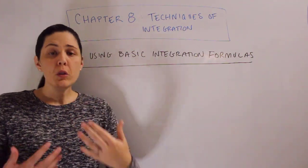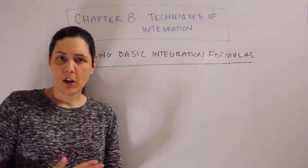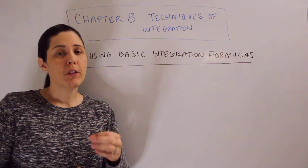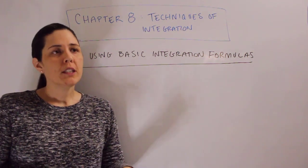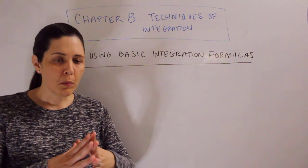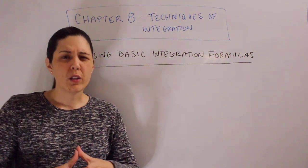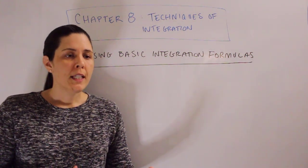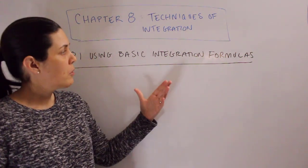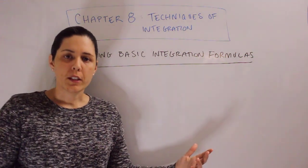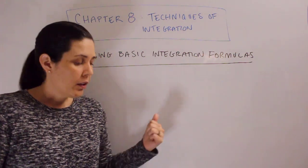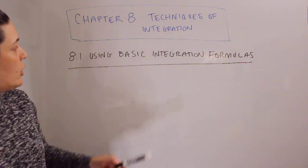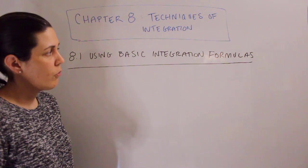So if you took Calculus 1 at Cal Poly, you stopped at probably the very beginning of Chapter 6. If you took it somewhere else, you probably stopped with integration — you had just learned some stuff about integration or antiderivatives. Now, yes, we're jumping to Chapter 8. We will go back into Chapter 6 next week, but we are going to start with Chapter 8. So: techniques of integration using basic integration formulas.